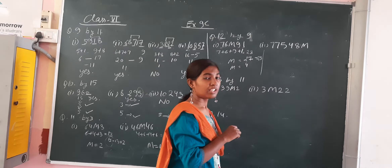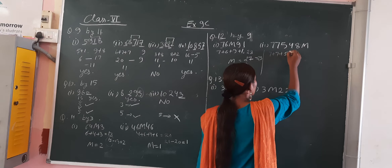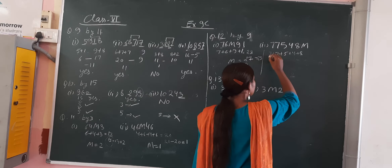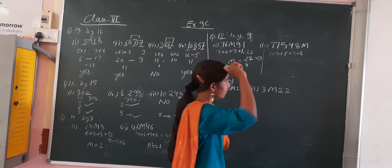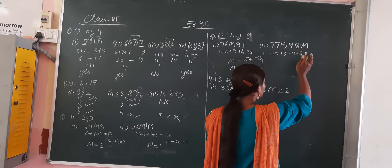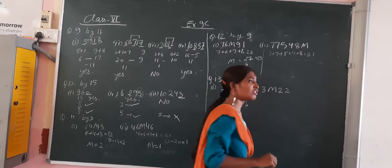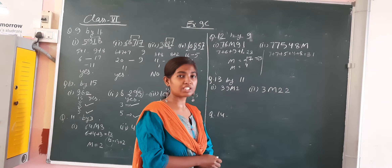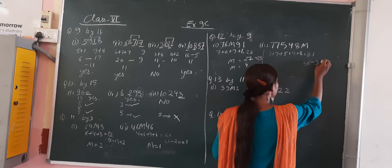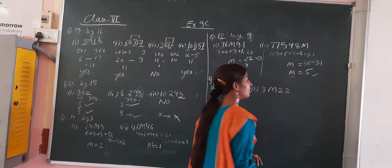Now find the digit sum for this one: 10 plus 7 is 17, plus 5 is 22 — wait, finding it step by step: the digits give a running total coming to 31. 31 is not in the 9 times table. The next multiple of 9 is 36. So 36 minus 31 is 5 — the value of M is 5.